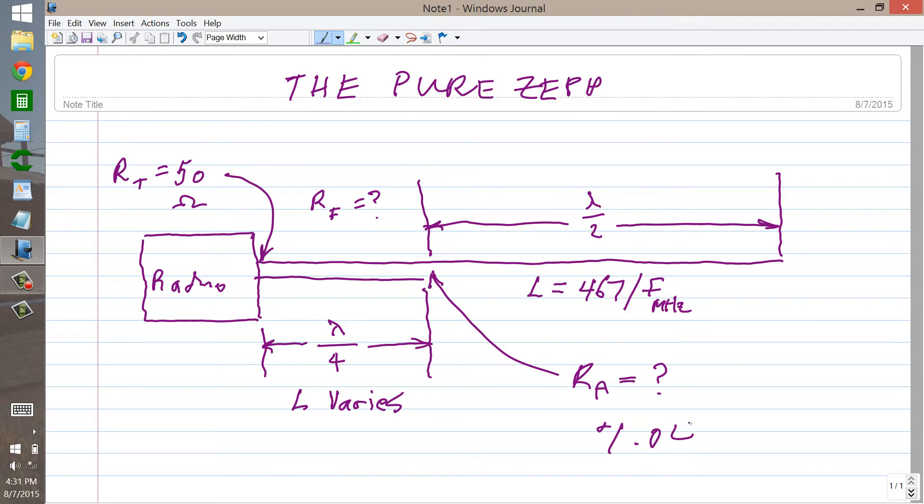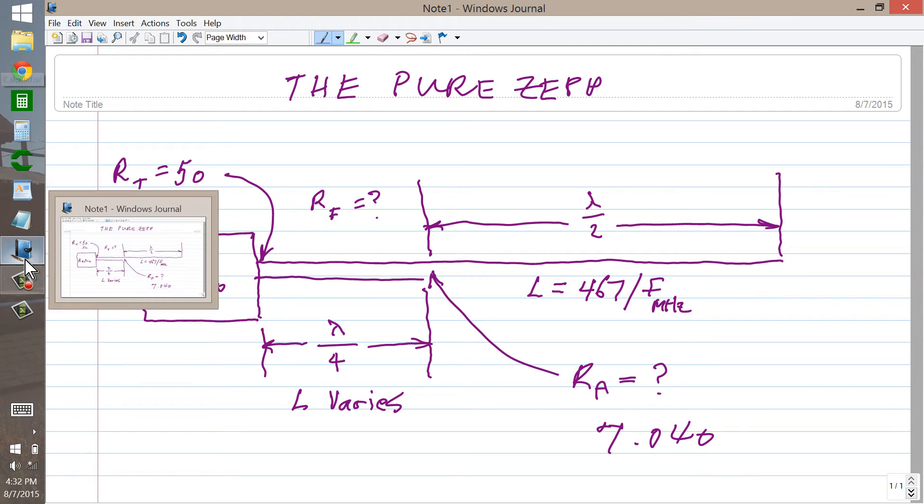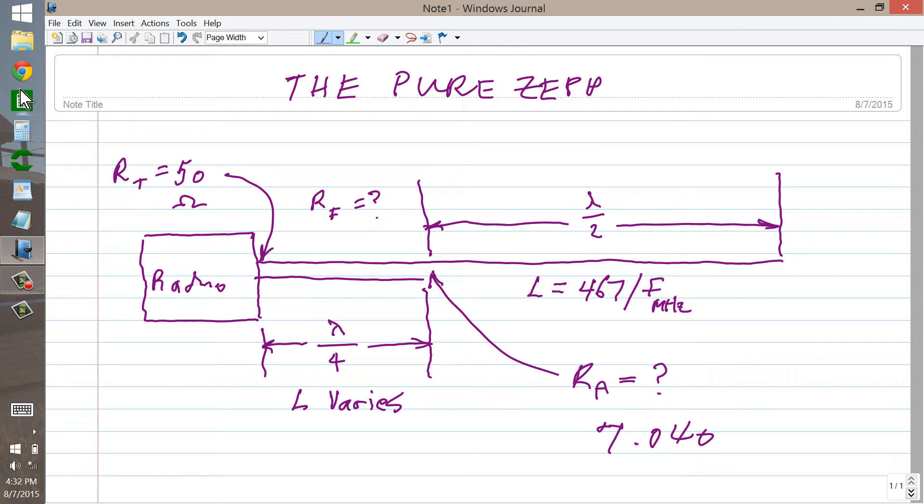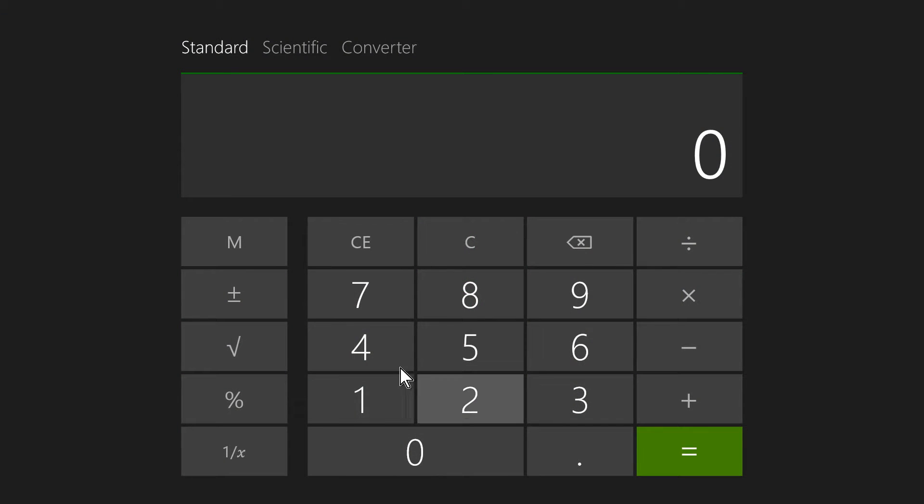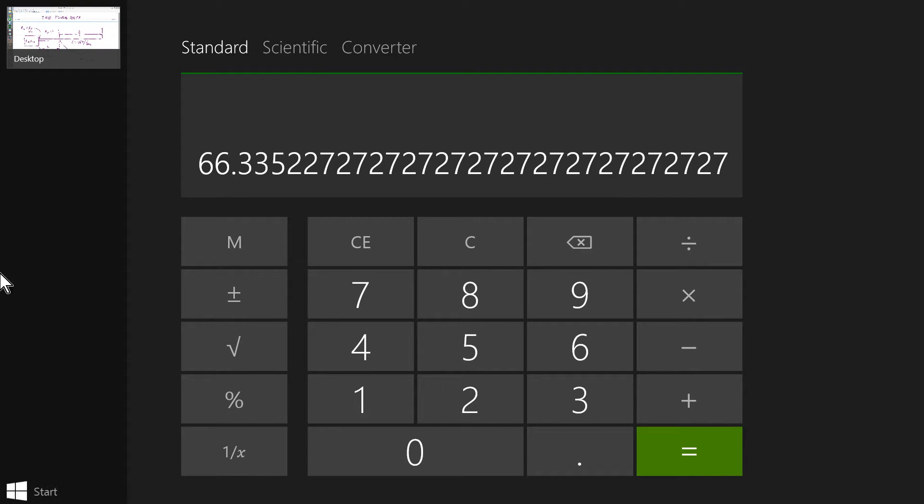7.040 MHz. So the length of this antenna in a case like that would be 467 divided by 7.040 MHz, equals about 66 feet 4 inches, 66 and one third feet. So that's the way that we would deal with that.